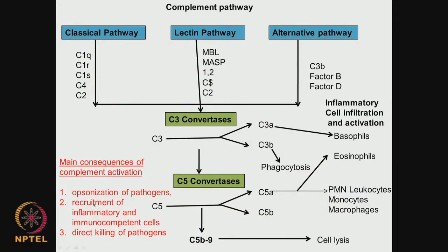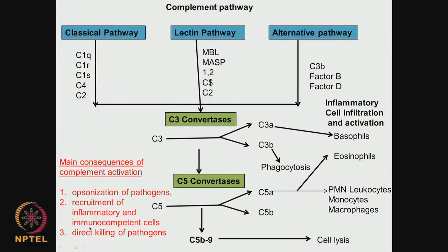The three things complement proteins do are: identify the pathogens or foreign body to the host defense so the defense system can go and kill exactly; recruit inflammatory and immunocompetent cells closer to the foreign body; and directly kill pathogens. It is like a special force that identifies who the terrorists are in a village, and then the army comes and targets exactly those people leaving innocent ones — that is the job of complement.